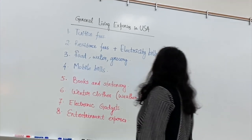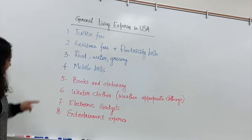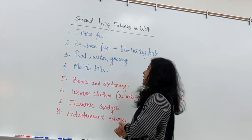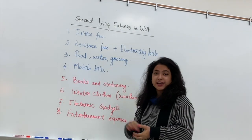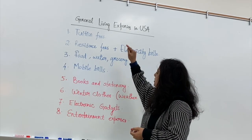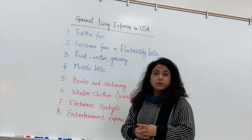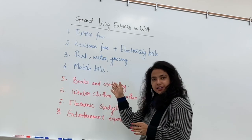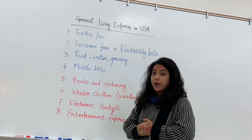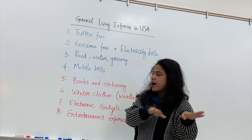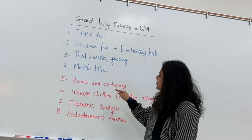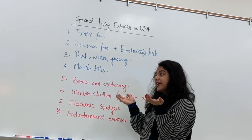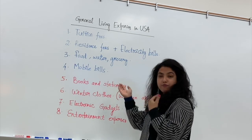We have listed eight points covering what the expenses will be and how you're going to divide your living expenses as an international student studying in the United States. The ones in blue are the ones you can't avoid at all — they are the most essential. Points five through eight are the least important, but they are also essential, just not as essential as the top four.